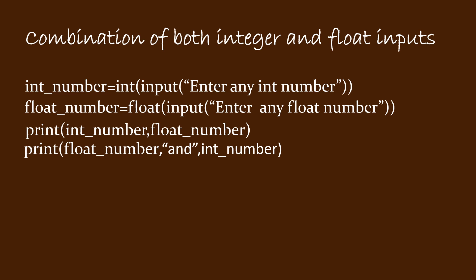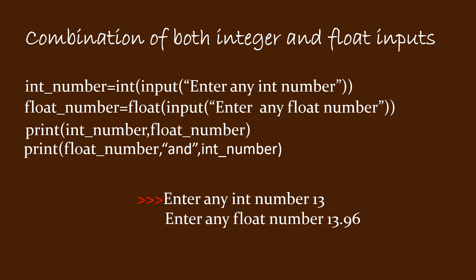Now let's see what will happen if you run the program. The first line is executed and the computer asks you to enter an integer number. Suppose you enter 13 — the variable int underscore number will contain 13. Then the second line is executed and suppose you enter 13.96 — the variable float underscore number will contain 13.96. When the third line is executed, int underscore number that is 13 is printed and float underscore number that is 13.96 is also printed in the same line as they are part of the same print function. When the fourth line is executed, float underscore number 13.96 is printed, then the word and is printed, and finally int underscore number 13 is printed.